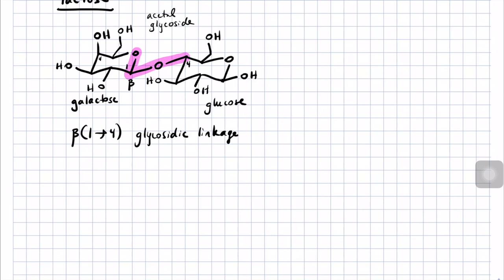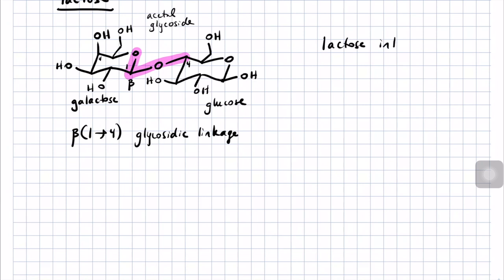Infants express an enzyme that can hydrolyze this beta-(1→4) glycosidic linkage between galactose and glucose. But the expression of that enzyme goes down in adults, and that is why many adults are lactose intolerant. If you don't hydrolyze this sugar in your stomach and small intestine, it passes through to the colon and begins to be digested by bacteria there, who grow and can cause bloating, gas, and other gastrointestinal symptoms. In people of northern European descent, there was a mutation many thousands of years ago that enabled the upregulation of the enzyme that hydrolyzes lactose, and that is why many people of European descent are not lactose intolerant.